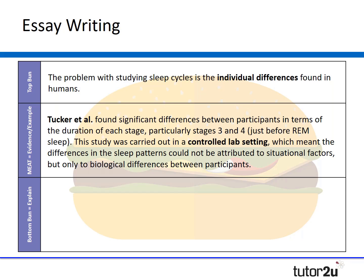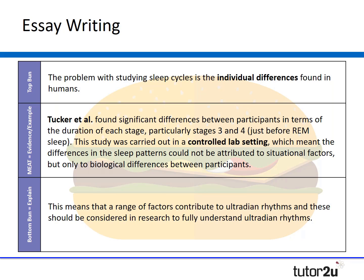Tucker et al found significant differences between participants in terms of the duration of each stage of sleep, particularly stages three and four just before REM sleep. This study was carried out in controlled laboratory settings, which meant the differences in sleep pattern could not be attributed to other factors but only to innate biological differences between the people — and that's important because it shows these differences must be internal. This means a range of factors must contribute to ultradian rhythms and these should be considered in research. You might also embed issues and debates here, mentioning that we should perhaps take an idiographic approach rather than a nomothetic approach that generates general laws.